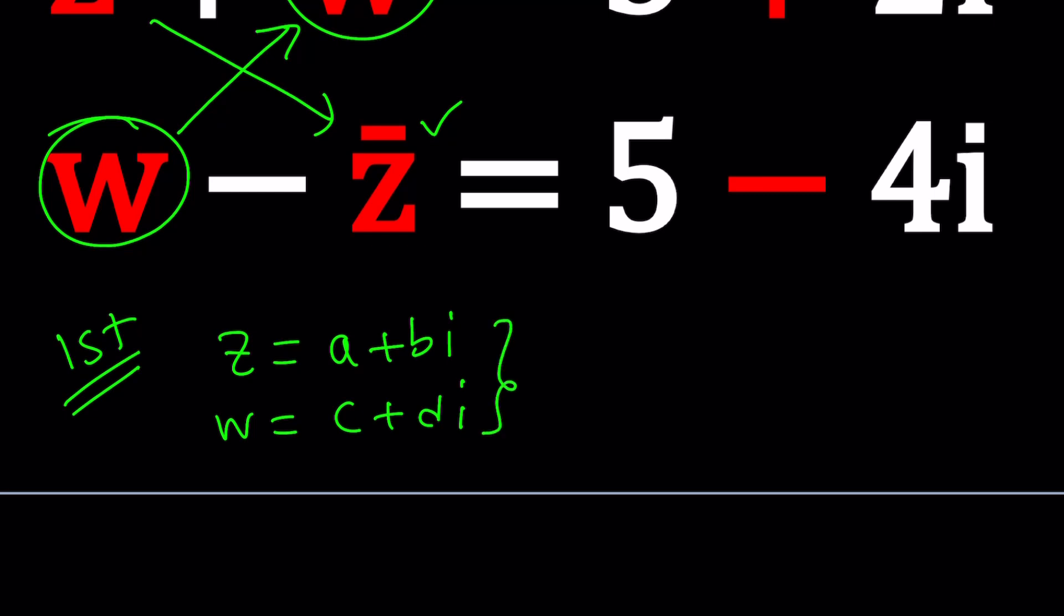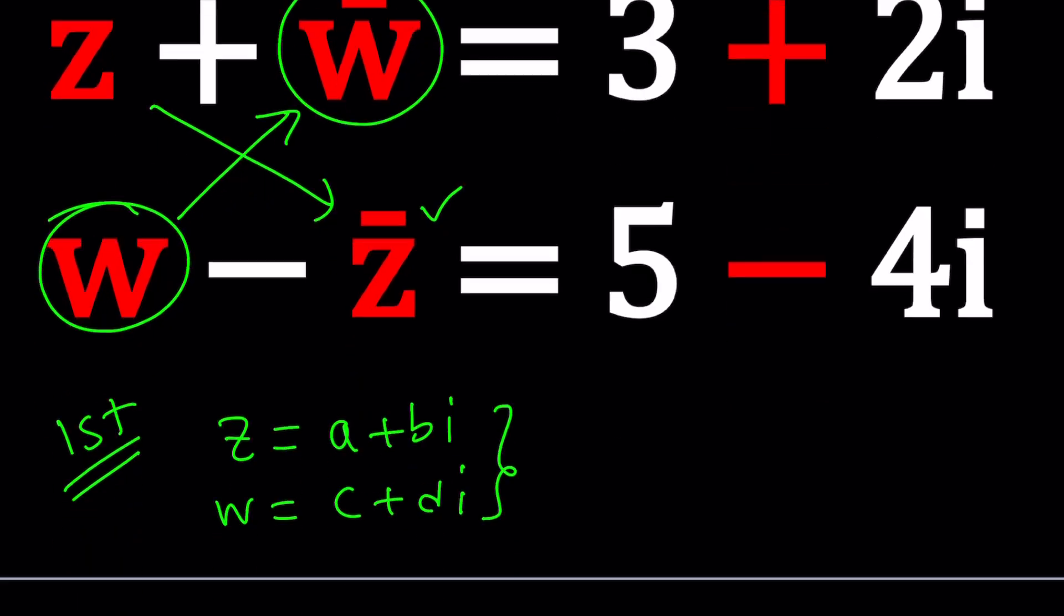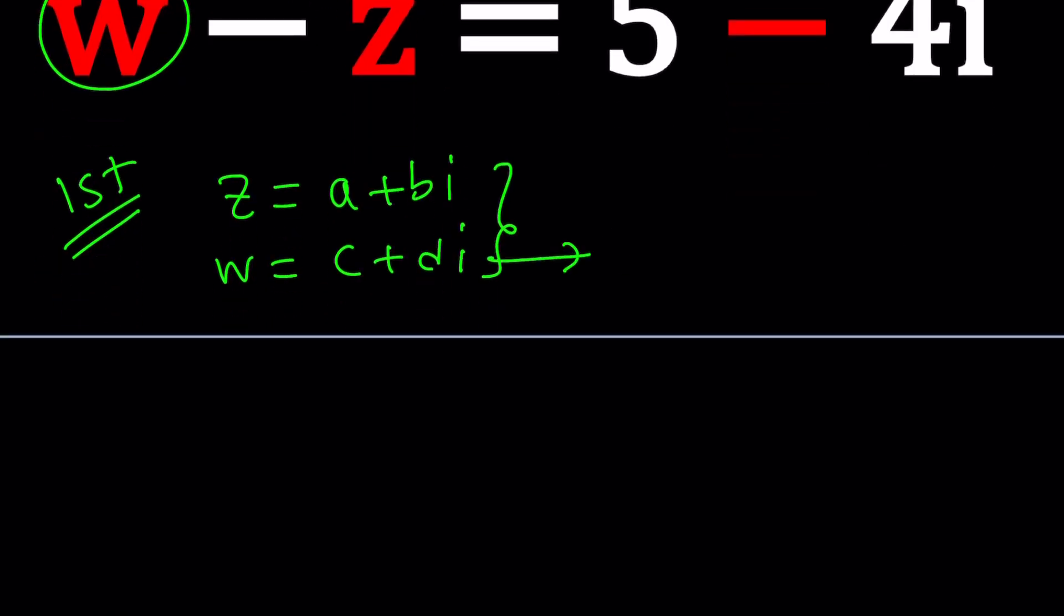Now we're going to plug this into our system and that's going to give us another system which we're going to hopefully solve and then come back and find Z and W. If you plug these into the first equation, W bar is going to be C minus D I and Z bar is just going to be A minus B I.